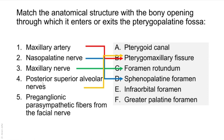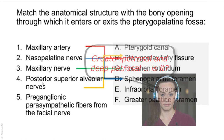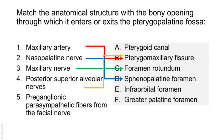Preganglionic parasympathetic fibers from the facial nerve — the parasympathetic component is the greater petrosal nerve, while the deep petrosal is sympathetic. They join together to form the nerve of the pterygoid canal, which reaches the fossa through the pterygoid canal. The greater petrosal is named so because we also have the lesser petrosal nerve, which originally comes from the glossopharyngeal nerve and is the preganglionic nerve for the otic ganglion, not the pterygopalatine ganglion.